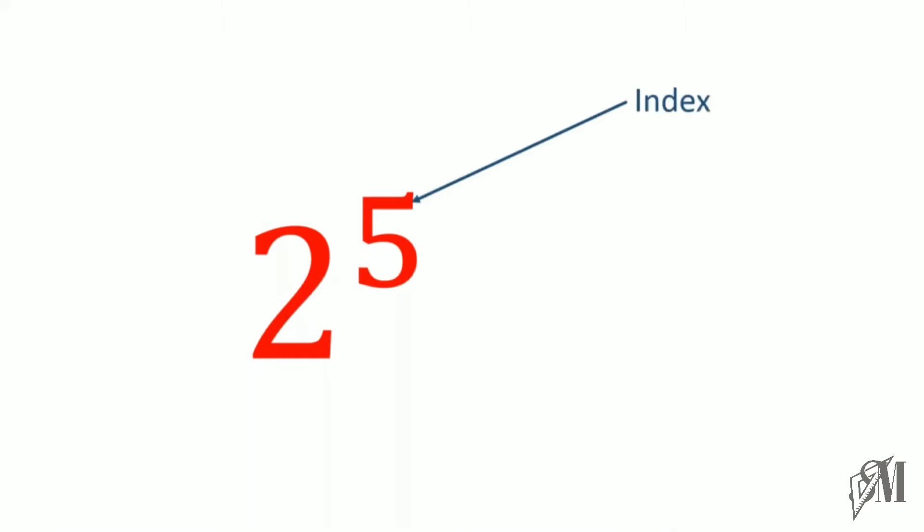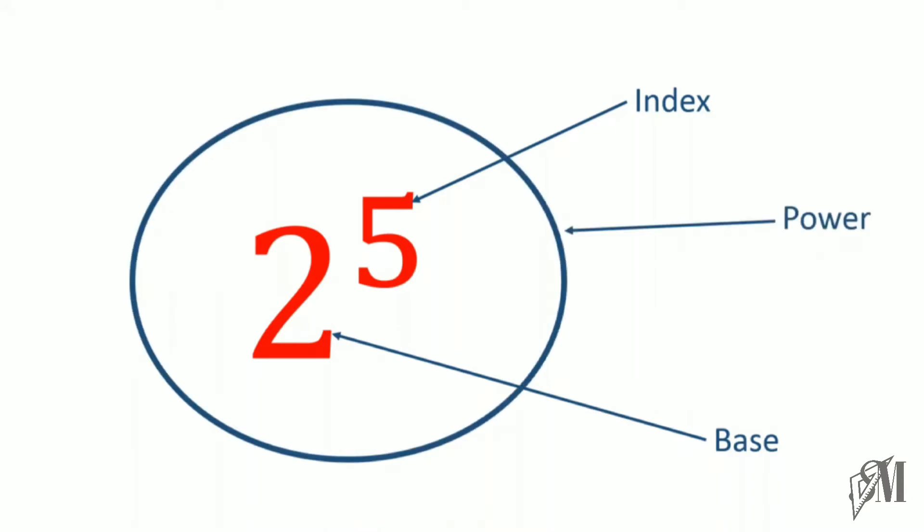Let us see what are the parts of this index notation. 5 is called the index while 2 is called the base, and the whole thing here is called a power.